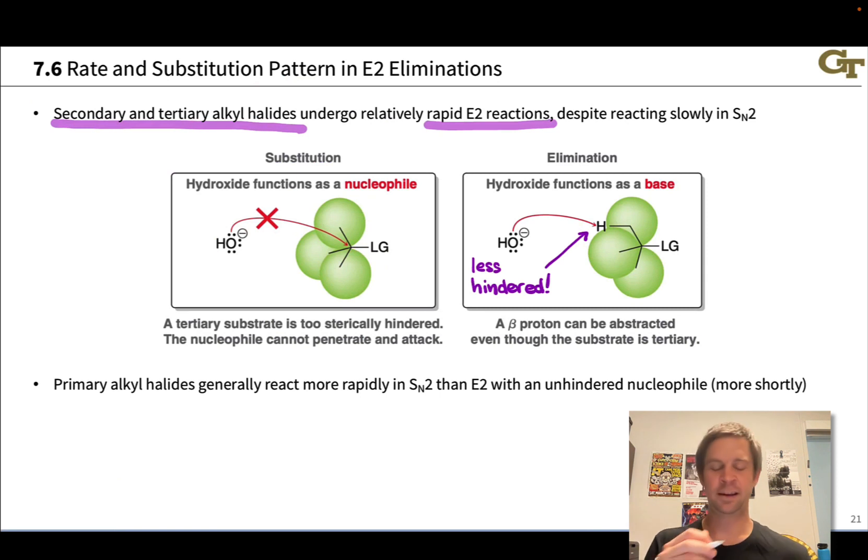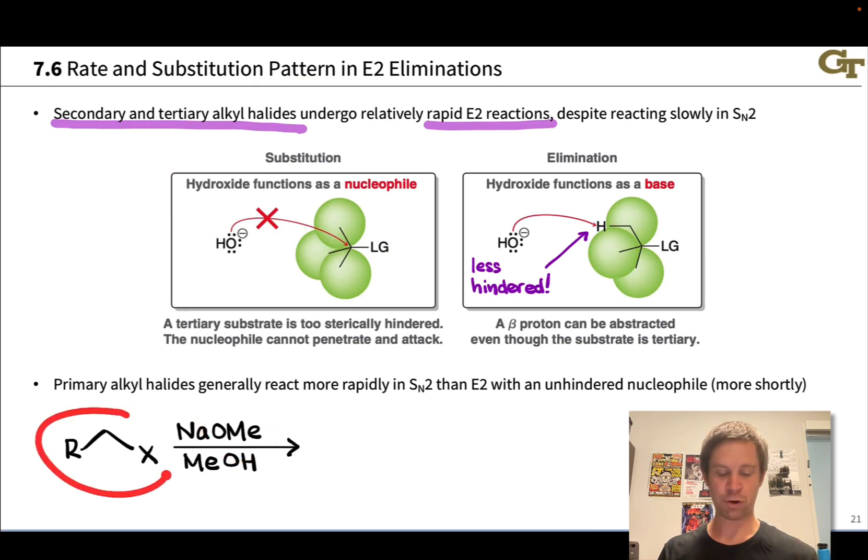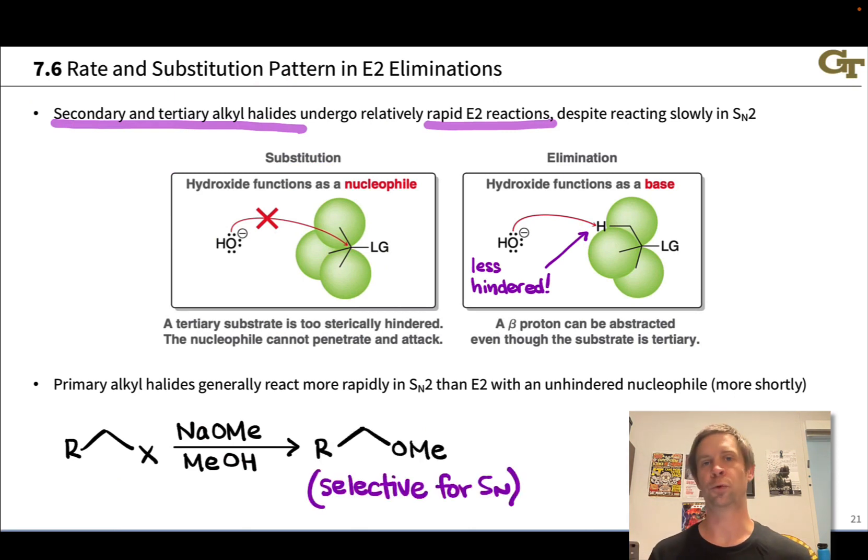Primary alkyl halides, as a rule, generally react more rapidly in SN2 than E2, as long as the nucleophile is unhindered, as long as the nucleophile doesn't have some steric bulk associated with it. For example, if we take quite an unhindered nucleophile in methoxide and treat it with a primary alkyl halide with a CH2 group right here at the carbon bearing the leaving group, the major product here is the SN2 product, the ether. This reaction is selective for nucleophilic substitution. We may see a little bit of elimination assuming there are beta hydrogens built into this R group, but the major product is more often than not the SN2 substitution product here.